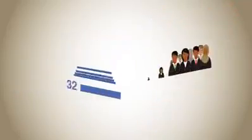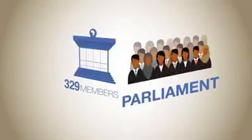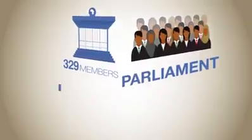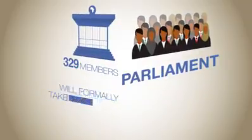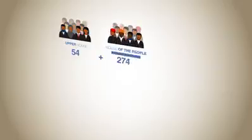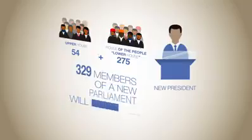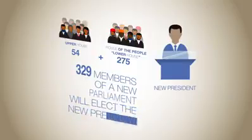Once this part of the process is finished, the 329 members of the new parliament will formally take their seats. After the swearing in of the new members of parliament, the president will be selected by all 329 members of the upper house and the house of the people.